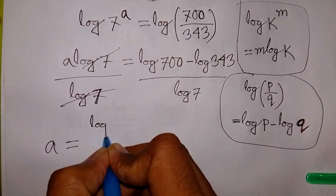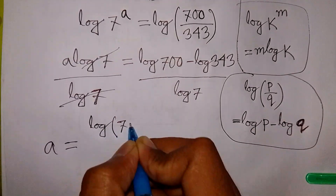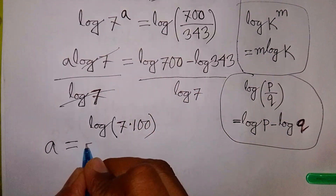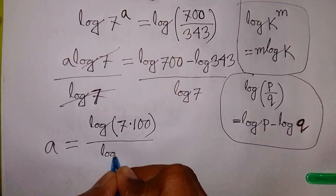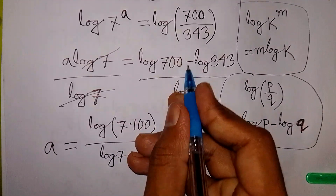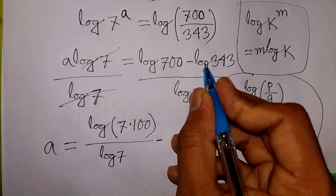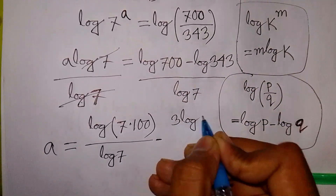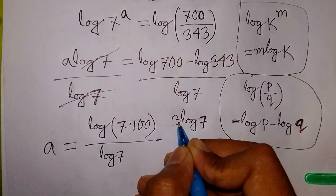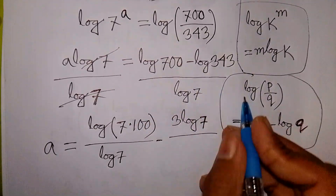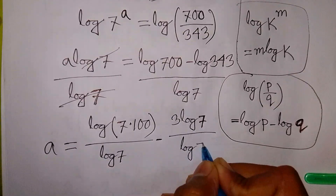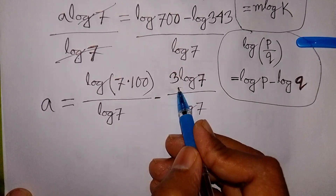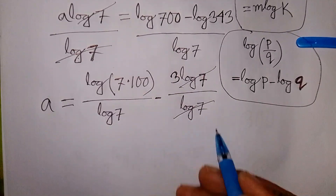Log 700 is the same as log of 7 times 100. Also, log 343 is the same as log of 7 to the power 3, which equals 3 log 7. We can see this log 7 will cancel out in subsequent steps.